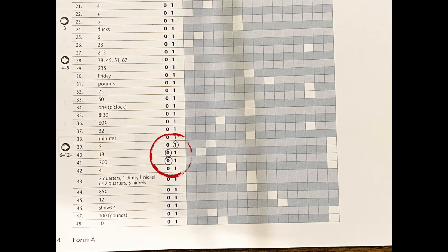In this demonstration, the student did not pass the first three items. They will then drop one starting point and will begin at item number 28.